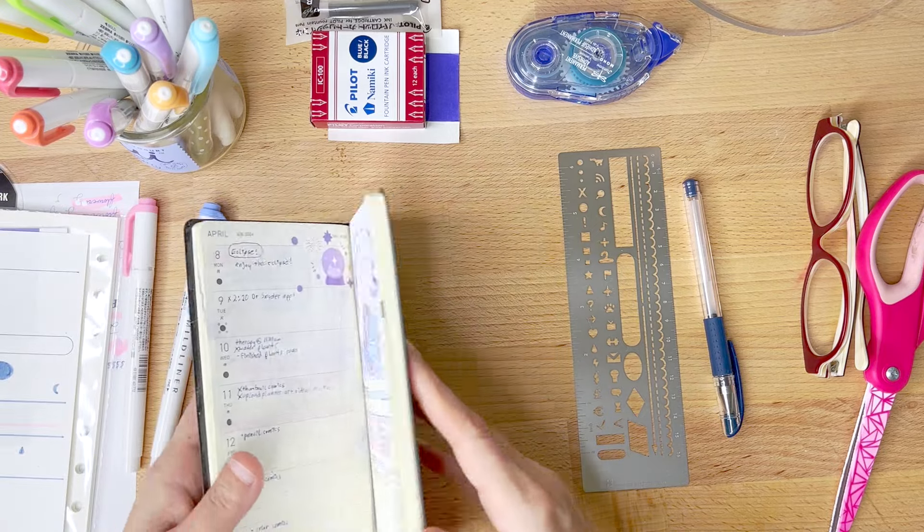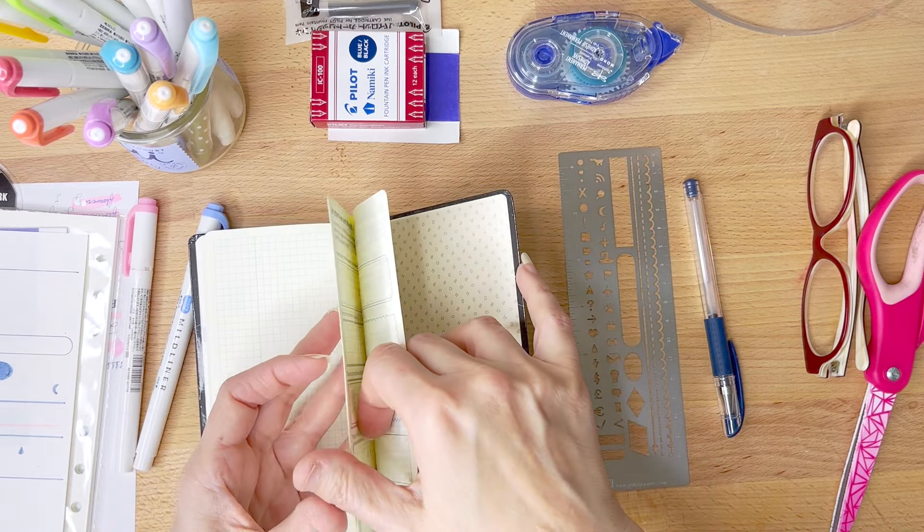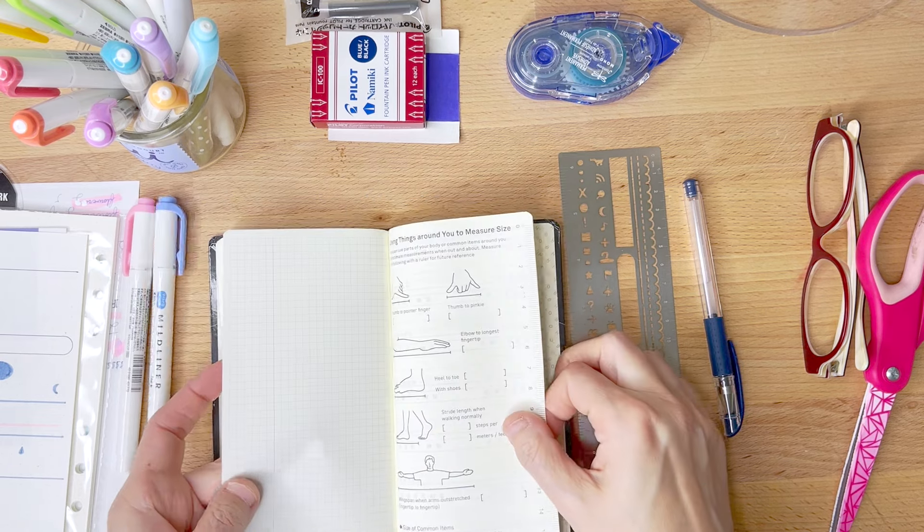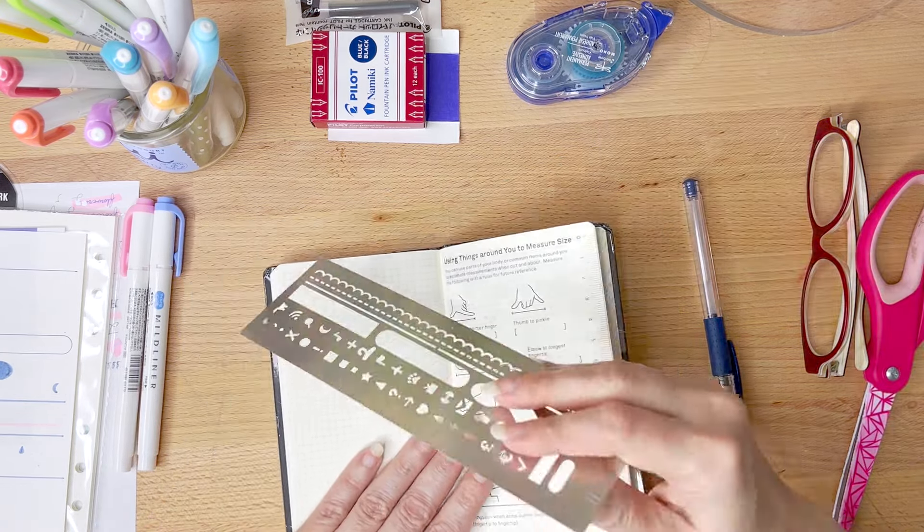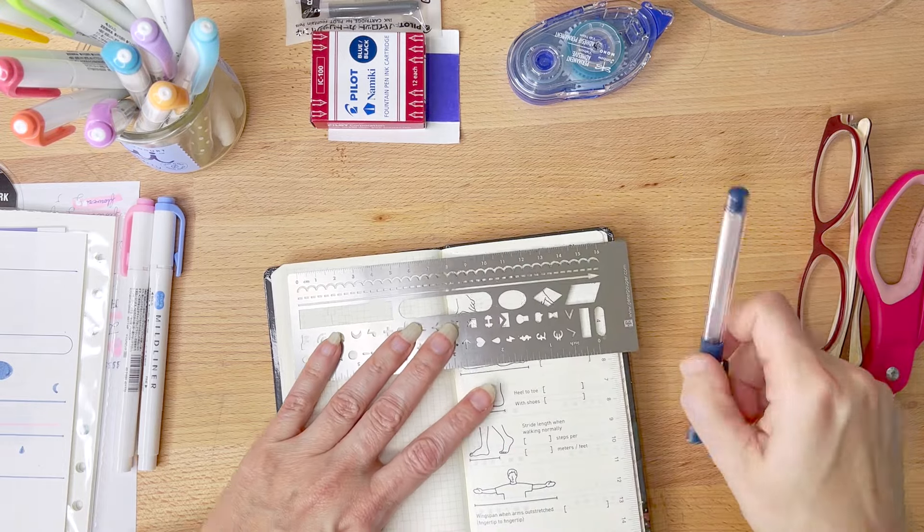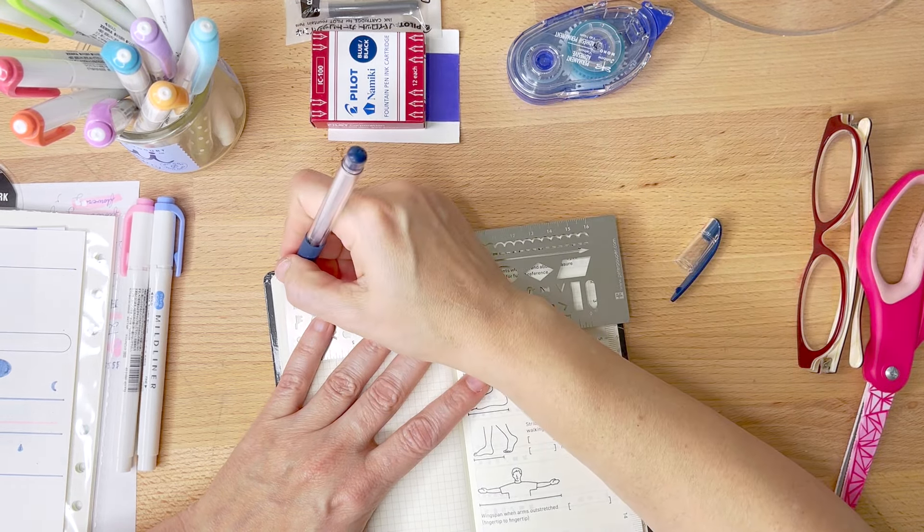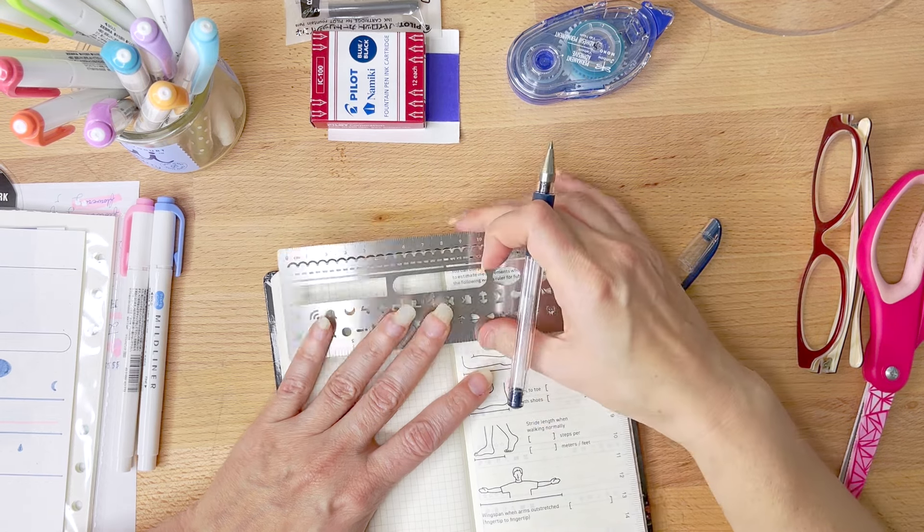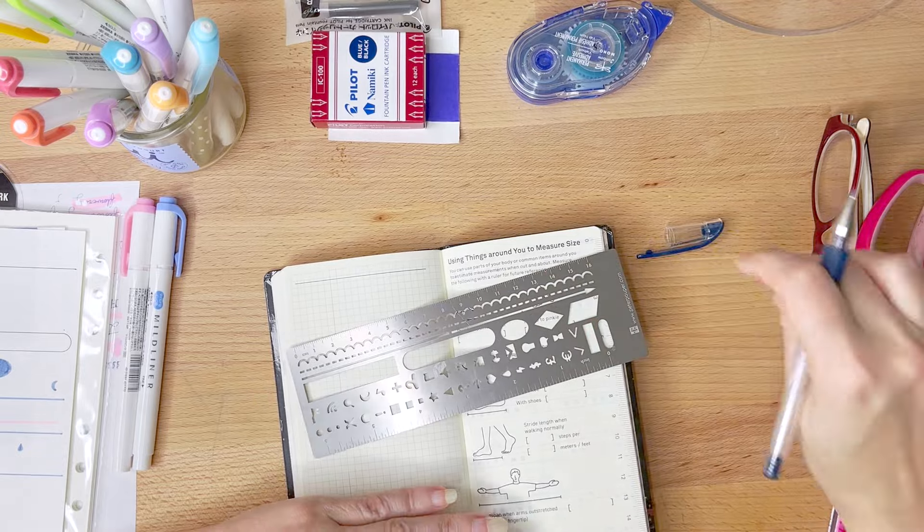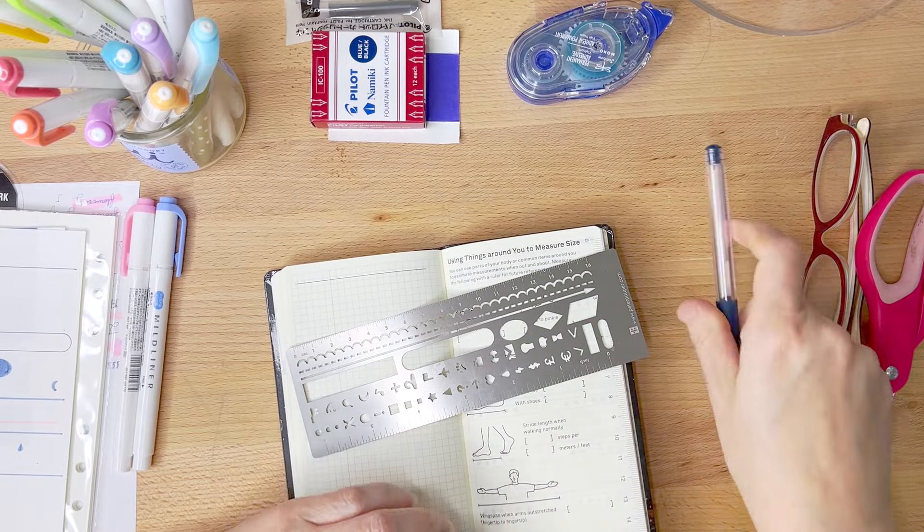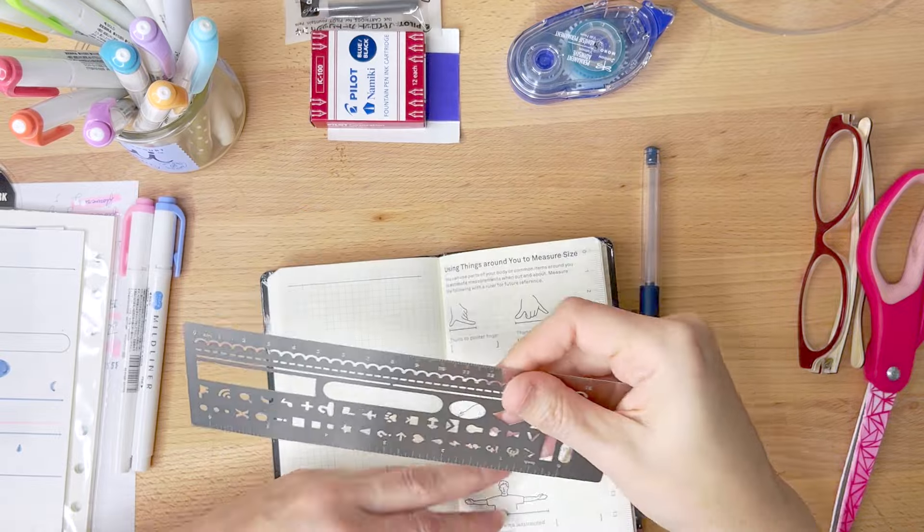So next up is to try the Hobonichi Weeks paper, and for this I'm going to find a page in the back, like, something far away from the front to do my little test swatches on. And I decided to start the test out with my trusty Uniball Signo ballpoint, just because I can't say enough nice things about that pen. I really like it, even though it's just super cheap. Anyway, with that control out of the way, it's time to test out the mild liner, which is the more important test here.